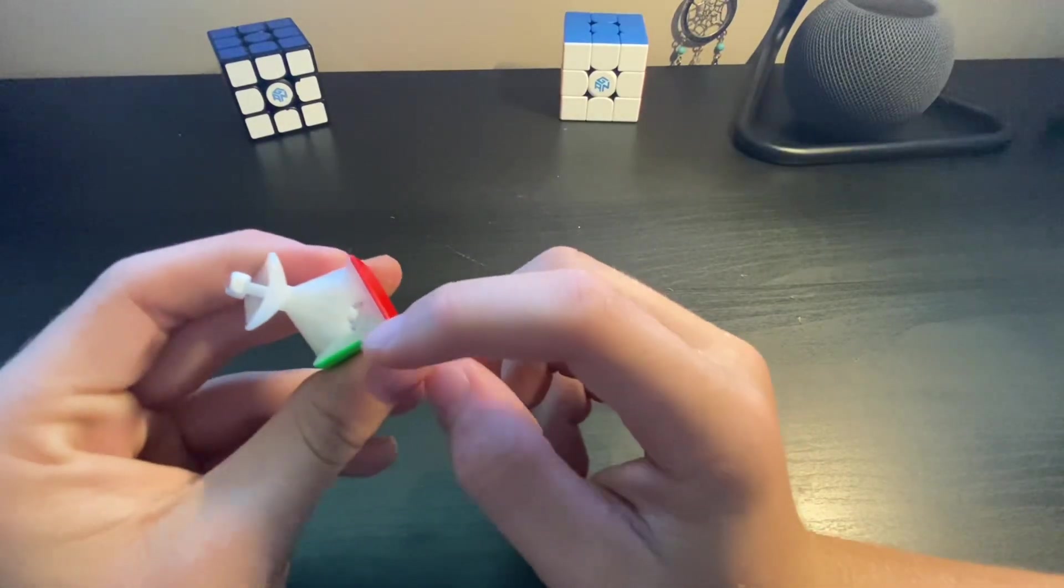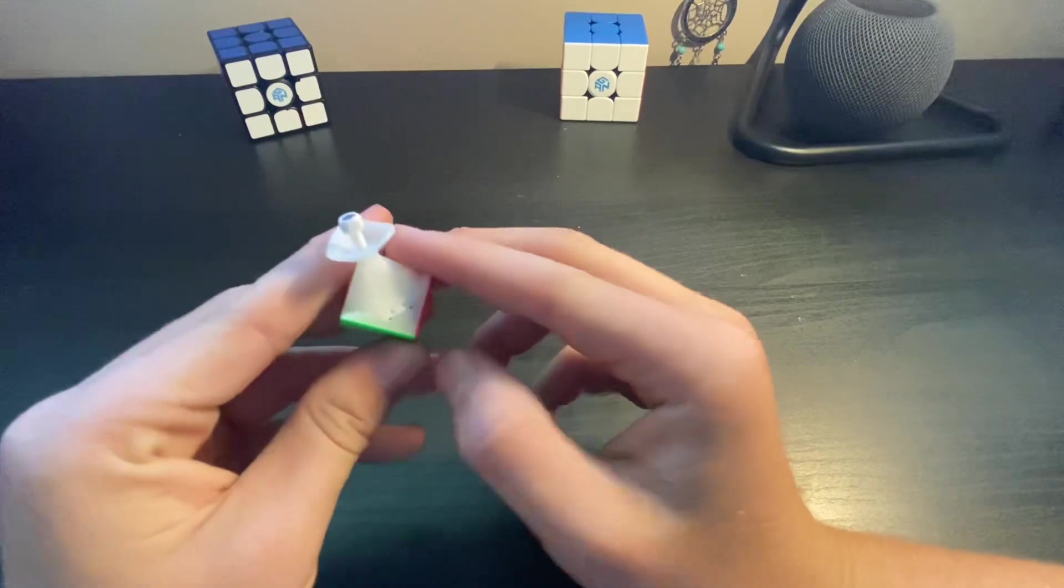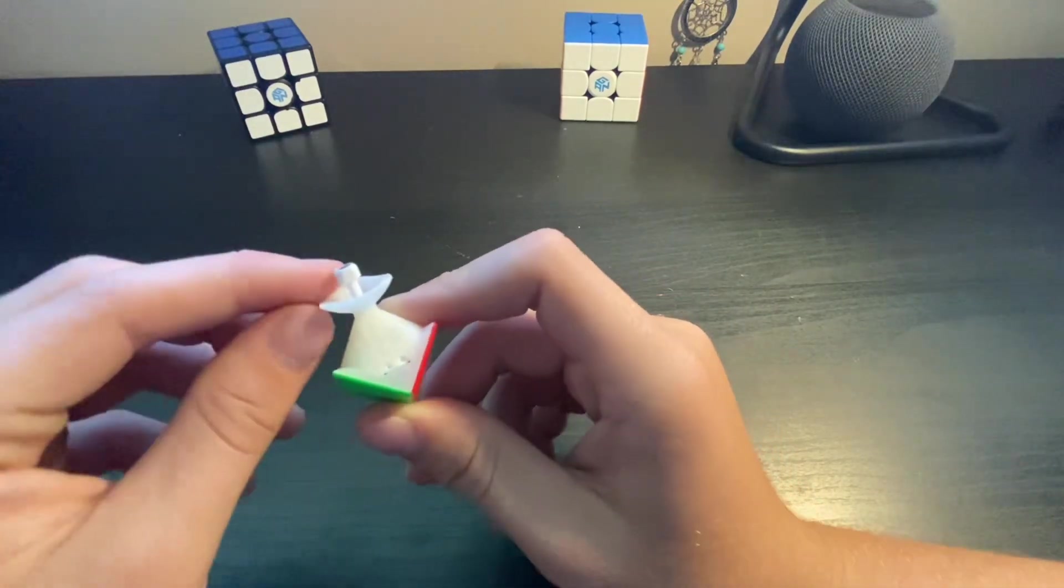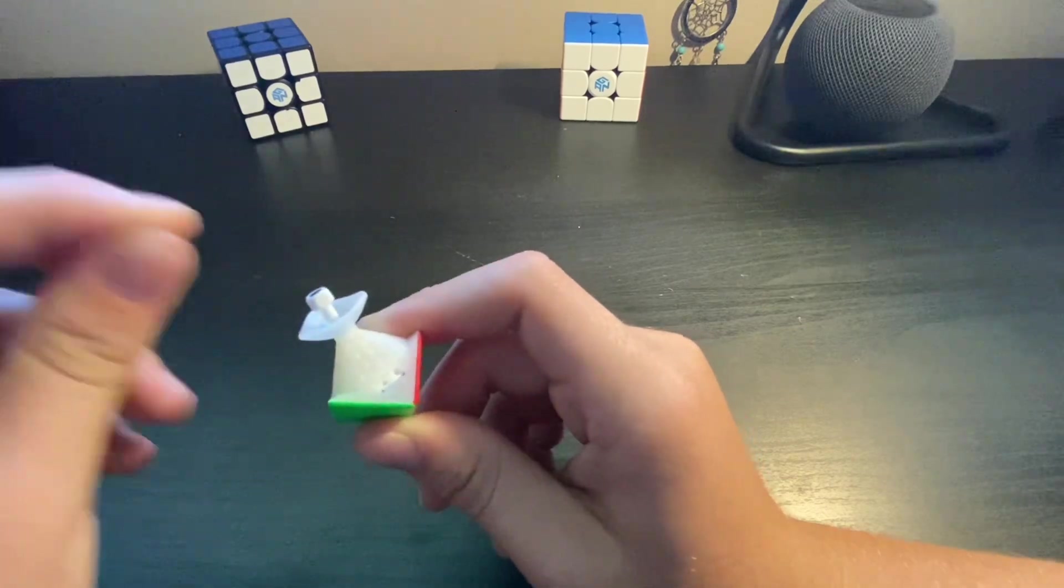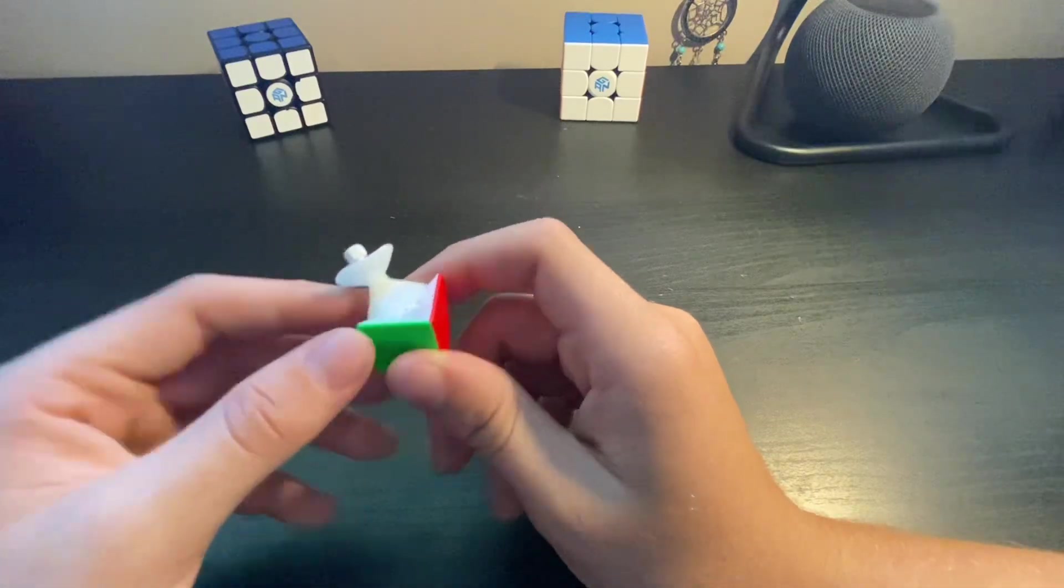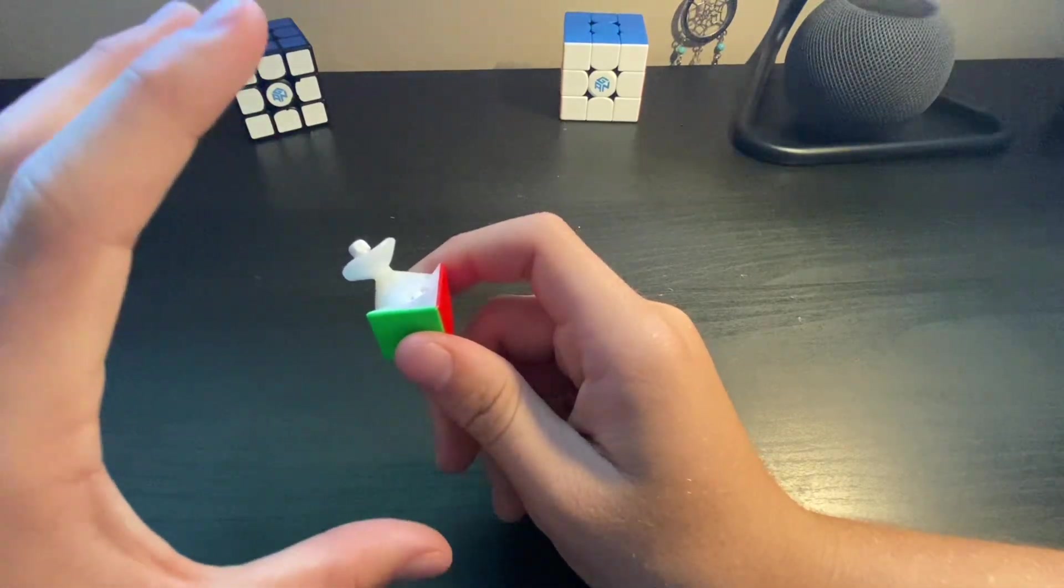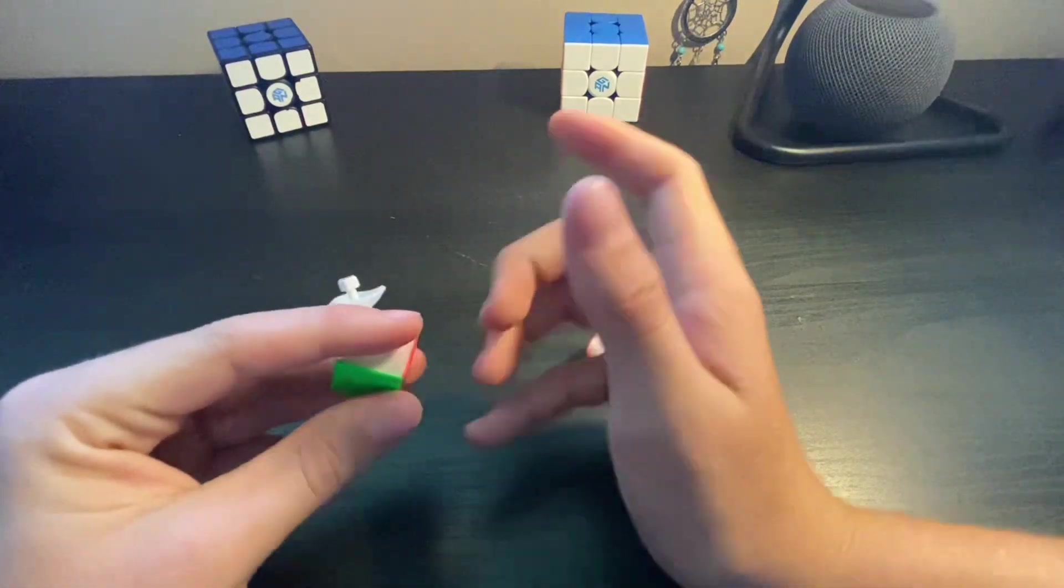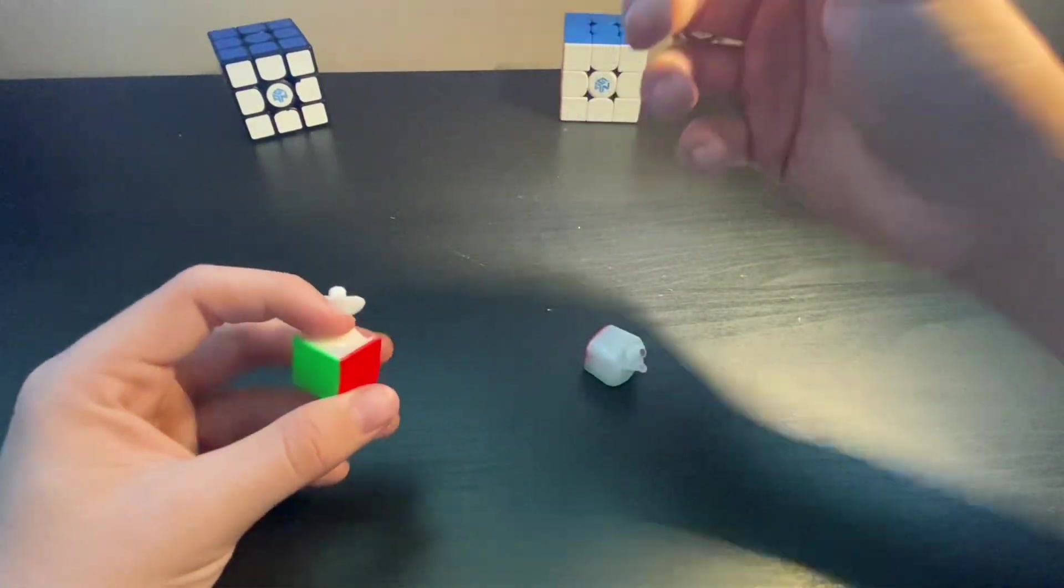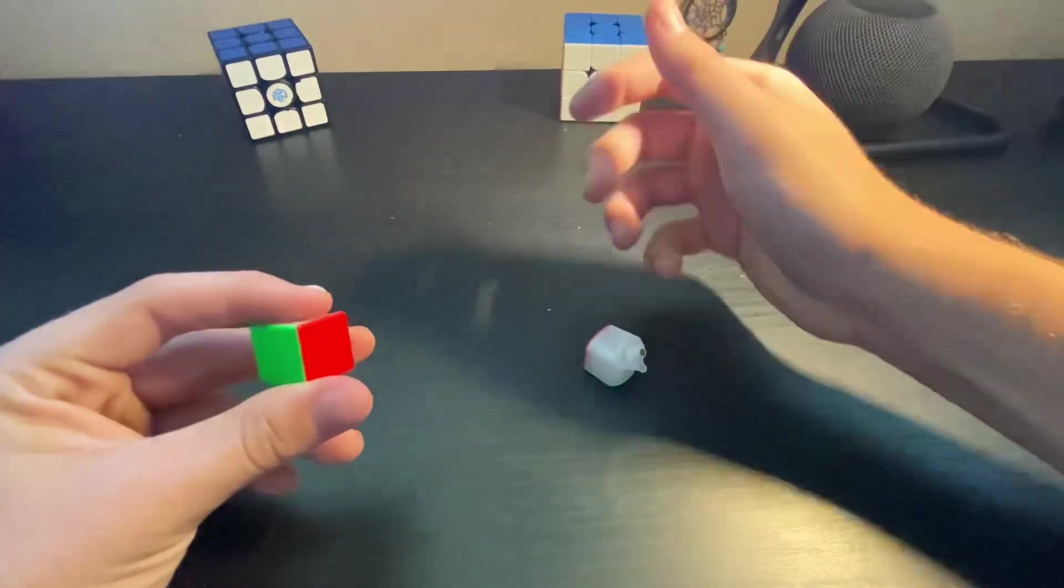And so when you adjust this little knob to increase the magnet strength, you're not actually increasing the magnet strength, you are taking this piece out further and further away from the base of the corner piece, and that brings it closer to the core of the cube, allowing for much more stability and, in turn, a much tighter-feeling magnet strength.